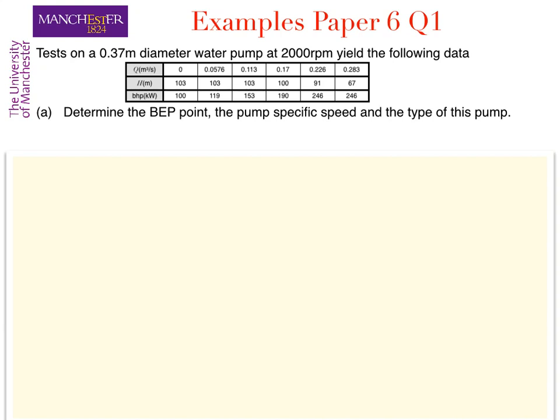Fluid Mechanics 2, Examples Paper 6, Question 1. In this problem we look at the performance of a pump with known characteristics at specific values of the flow rate. For the first part we must determine the best efficiency point.